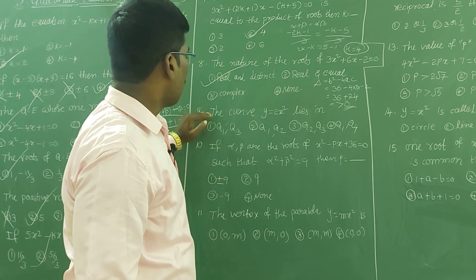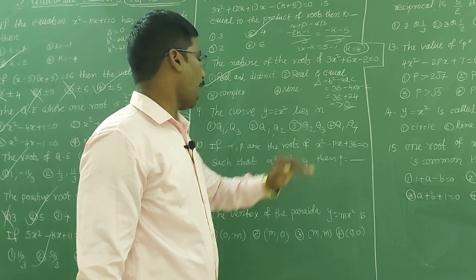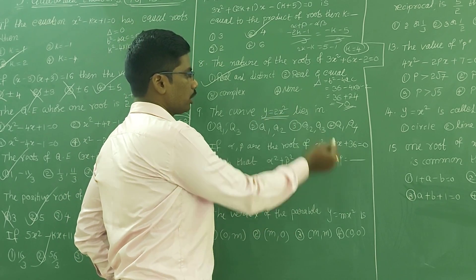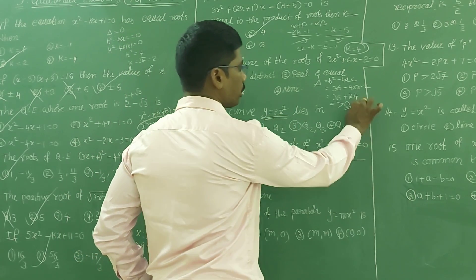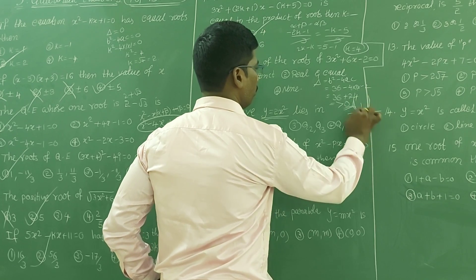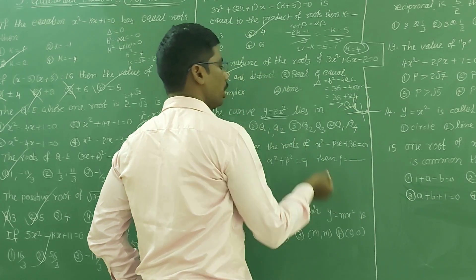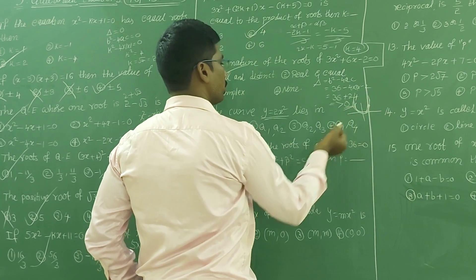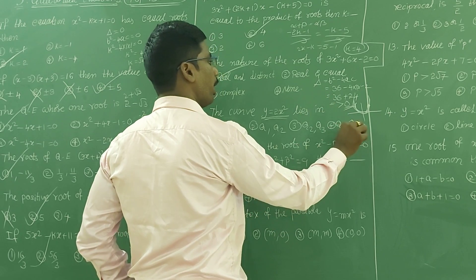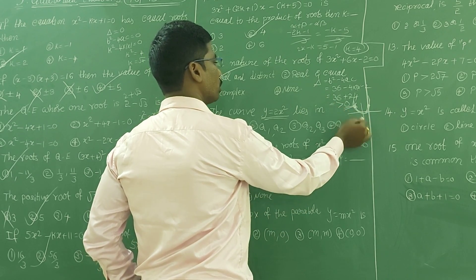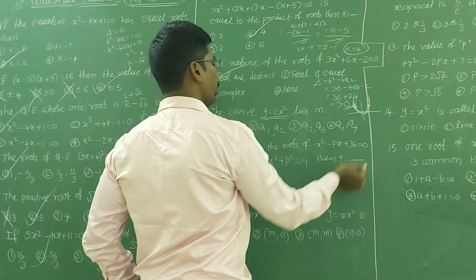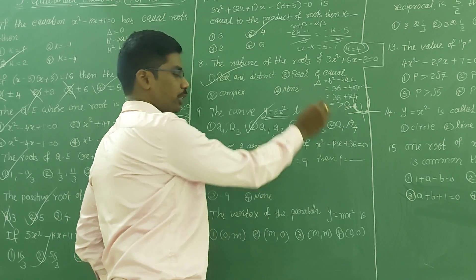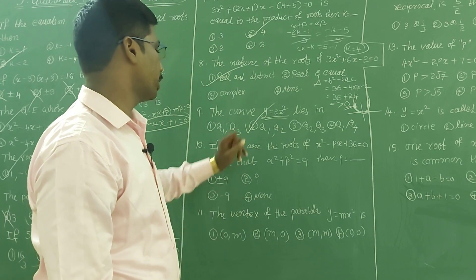The curve y = 2x² lies in which quadrants? This curve always lies in the first and second quadrants. Substituting x = 1 gives a positive y-value, and substituting x = -1 also gives a positive y-value. So the answer is first quadrant and second quadrant — the second option.